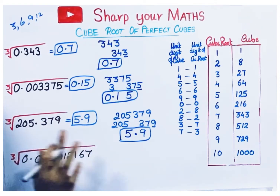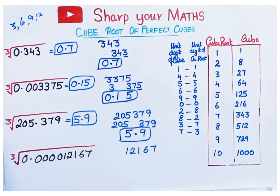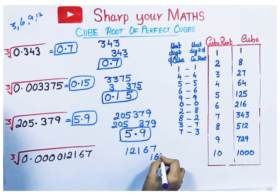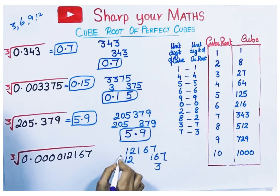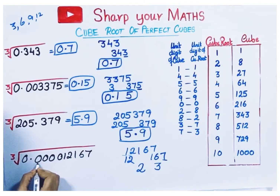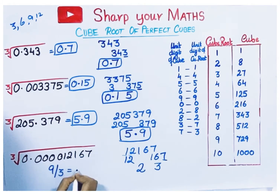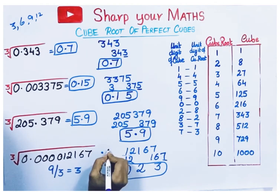To find the cube root of a decimal: remove the point and divide the number into groups — last 3 digits one group, remaining another. Check the unit digit: if the cube ends with 7, its cube root ends with 3. Take the left group, 12. It is close to the cube 8, so its cube root is 2. The cube has 9 decimal places. 9 divided by 3 is 3, so the cube root should have 3 decimal places. Insert zeros as needed — the answer is 0.023.